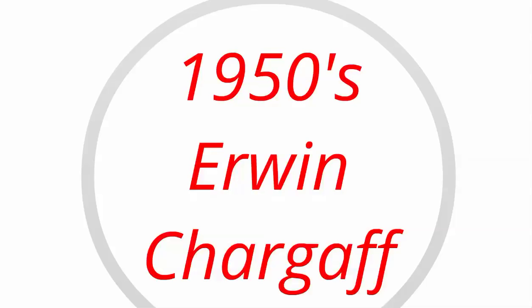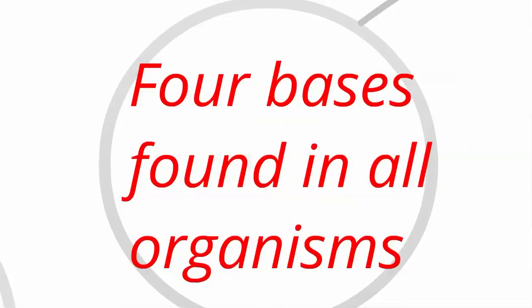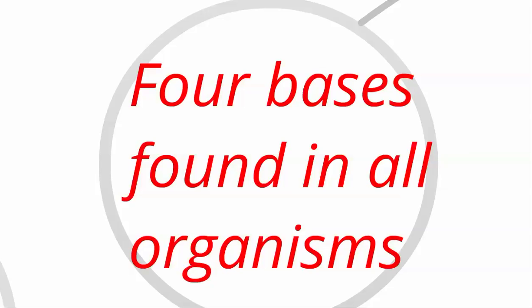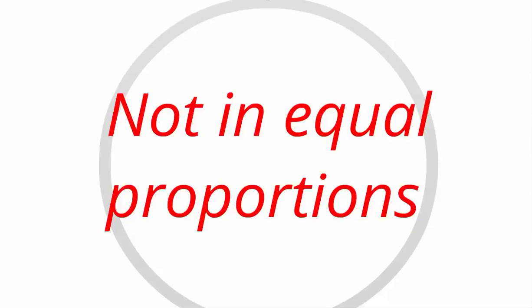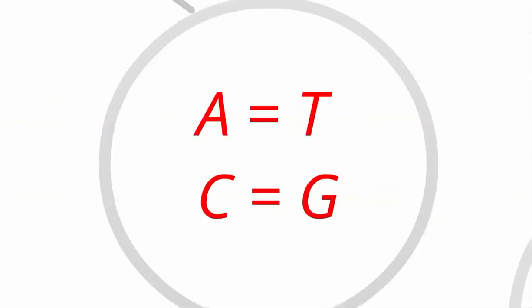In the 1950s, there was a man named Erwin Chargaff who came up with three main ideas. First, he found that there were four bases found in all organisms. Secondly, he said they are not found in equal proportions — not all animals and plants have equal proportions of DNA. Some may have more of the A base, some more of the G base, some more of the C base, and so on. Lastly, he said however many A bases you have, you will have the same amount of T bases, and however many C bases you have, you will have the same amount of G bases.